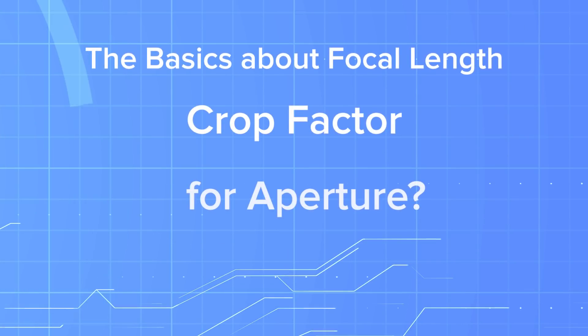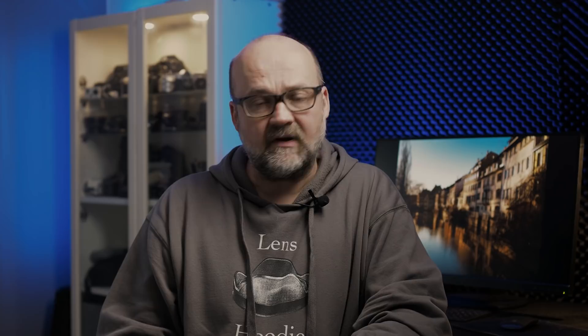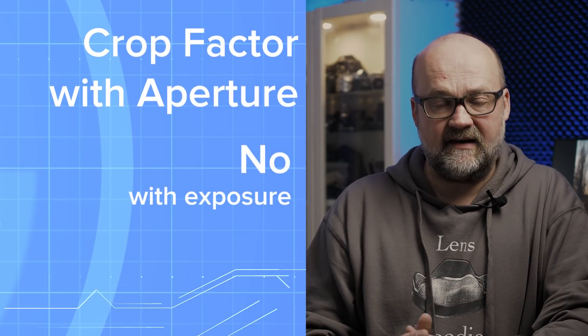Should we use the crop factor with aperture too? Well, the answer is yes and no. Yes when it comes to depth of field, but that has nothing to do with sensor size — I'll talk about that later. But when we talk about exposure, the answer is no. It doesn't matter; if I put this 25 millimeter f1.2 lens on a full frame camera, it will still be an f1.2 lens. That doesn't change and the exposure is exactly the same.